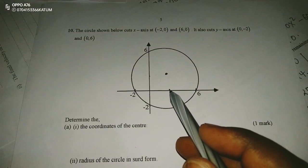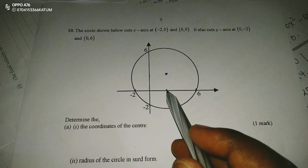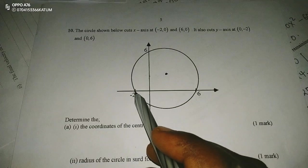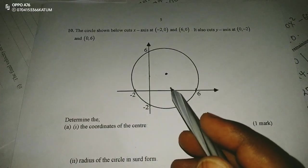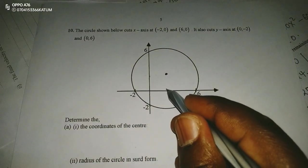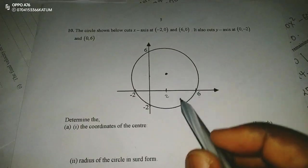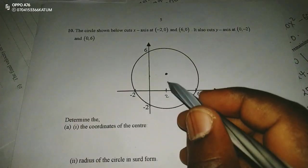That means the center of the circle will have 4 units from either of the ends. Therefore, from -2, 4 units will take me to positive 2, a point here. Therefore, at positive 2, that will be the center of this axis.